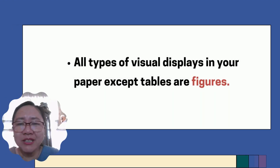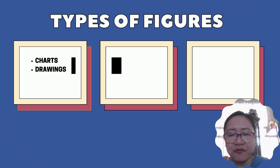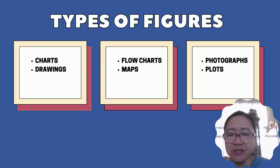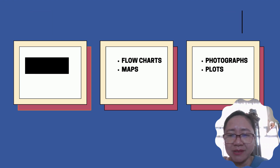All types of visual displays in your paper except tables are figures. Figures include charts, drawings, flowcharts, maps, photographs, and plots.